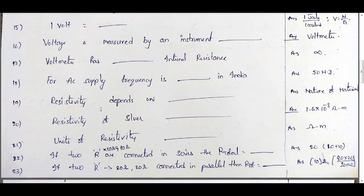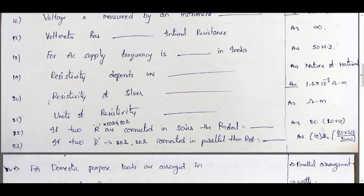Resistivity, denoted by rho, depends only on the nature of material. It does not depend on length or area. If options are length, area, nature of material, or none — the answer is nature of material. The resistivity of silver is 1.6 × 10⁻⁸ ohm-meter. Units of resistivity are ohm-meter.